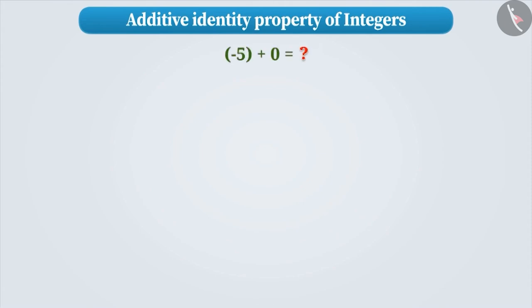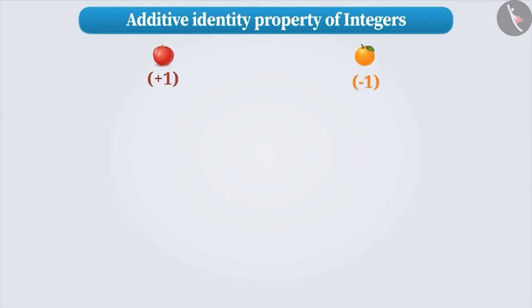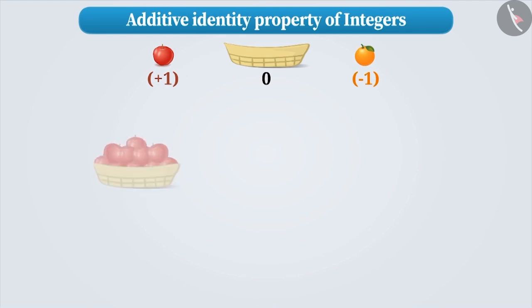Let's understand it. Suppose that the value of 1 apple is plus 1 and the value of 1 orange is minus 1. When the basket is empty, we will say that the value of the basket is 0.